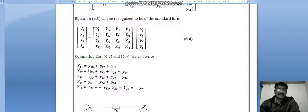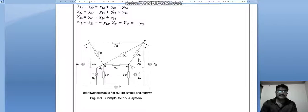We will get Y11 equals Y10 plus Y12 plus Y13. Similarly, Y22 equals Y20 plus Y12 plus Y23 plus Y24. We will get the equation like this.